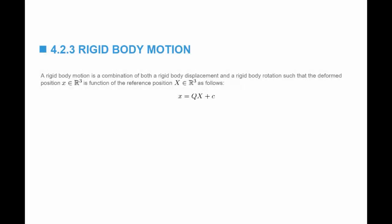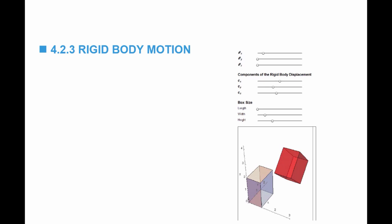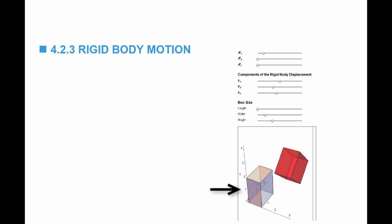The third simple example of displacement is called rigid body motion. A rigid body motion is a combination of both rigid body displacement and rigid body rotation. The new position x is equal to a rotation matrix multiplied by the original position capital X plus the constant rigid body displacement vector c. The displacement function u equals x minus capital X, and since small x equals QX plus c, we get u equal to Q minus I capital X plus c. On the website, there is a tool that draws a rigid body motion given theta x, theta y, theta z, and the components of the rigid body displacement.